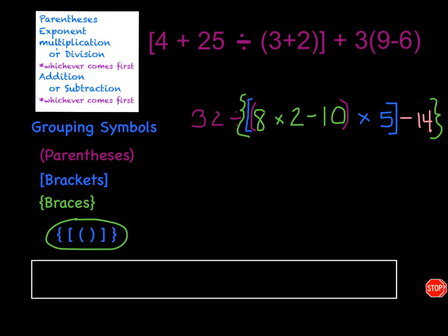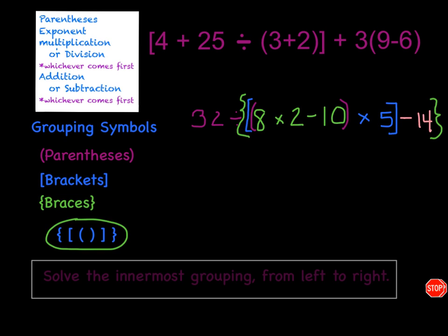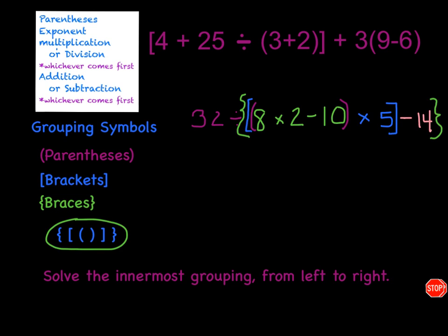When solving a problem that has all of these symbols, we have to follow certain steps. We are going to solve the innermost grouping and solve it from left to right. In this case, the innermost grouping is always the parentheses, and then you would solve the brackets, and then finally, third, you would solve the braces.